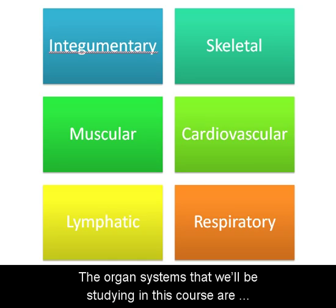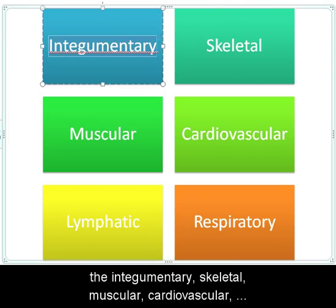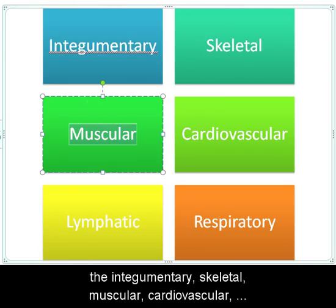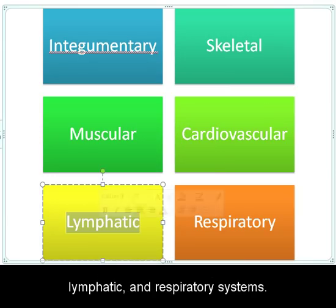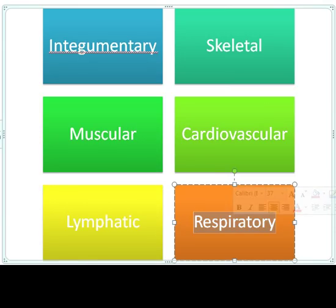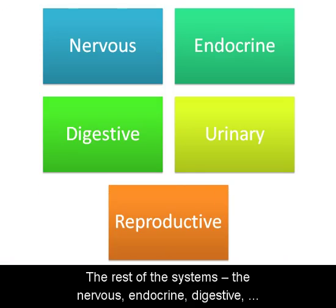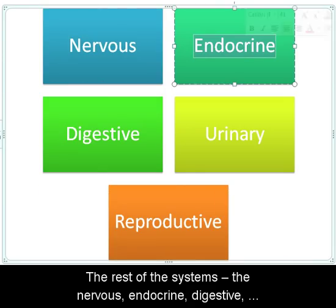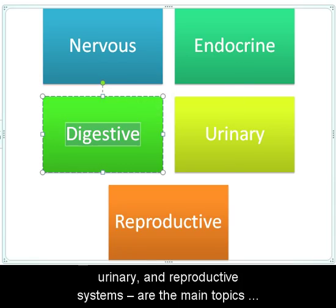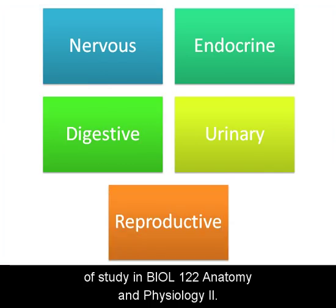The organ systems we will be studying in this course are the integumentary, skeletal, muscular, cardiovascular, lymphatic, and respiratory systems. The rest of the systems — the nervous, endocrine, digestive, urinary, and reproductive systems — are the main topics of study in Biology 122, Anatomy and Physiology 2.